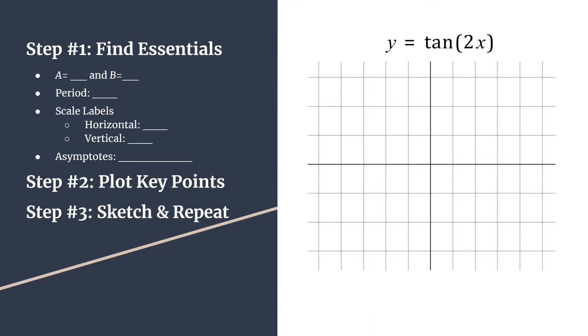Step one to getting a nice sketch of tangent 2x is to find the essentials. We'll start by finding a and b. Remember, a is just the coefficient in front of tangent — it's an understood one in this case — and b is the coefficient of x, so two in this case. We can use b to find the period. The period of tangent is always pi divided by b, so our period is pi over 2.